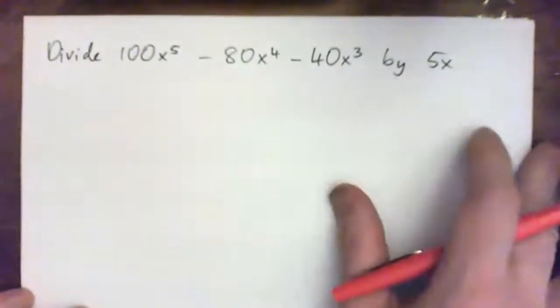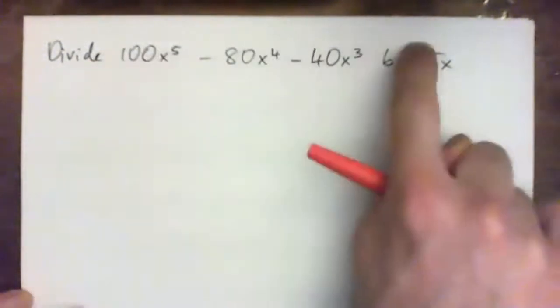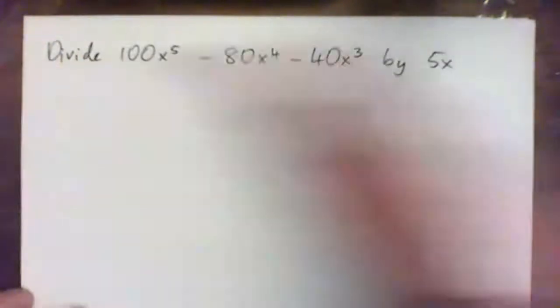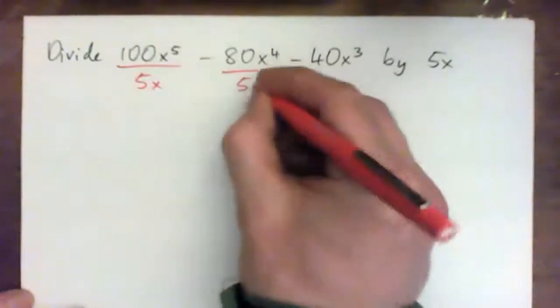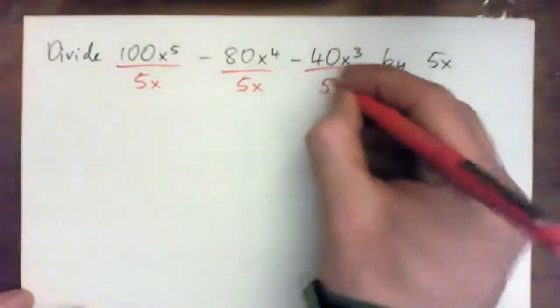So as we've talked about, that means you divide the whole thing by 5x, which is the same as dividing each individual term by 5x. So we divide each individual term by that.